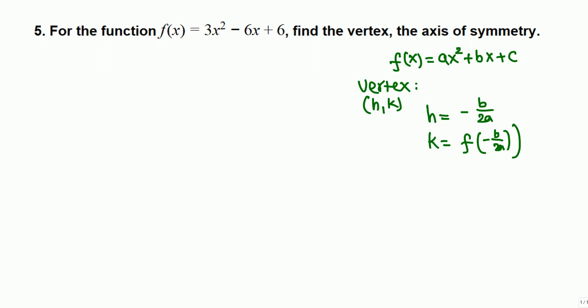That's the vertex. The axis of symmetry will be a vertical line x equals h. Negative b over 2a will be a number; x equals this number is the vertical line which is the axis of symmetry.